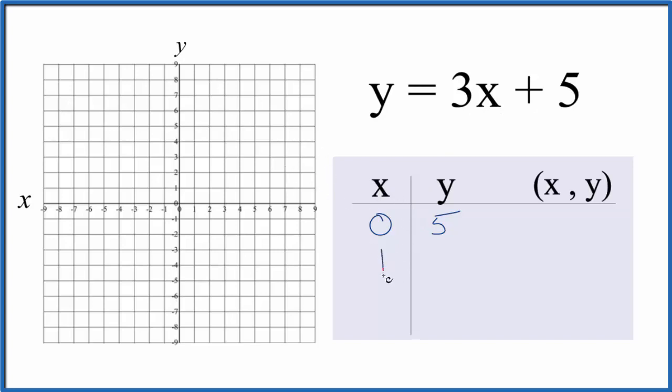How about if we choose 1, because 3 times 1, that's 3, 3 plus 5 is 8. And then if we put negative 1, 3 times negative 1, that's negative 3, plus 5, that'll give us 2.